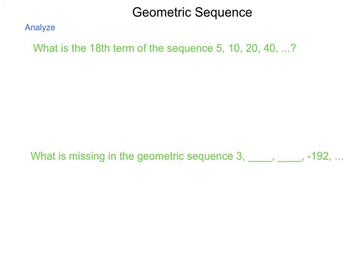Looking at this, in order to move from 5 to 10, we multiply by 2, 10 to 20, we multiply by 2, 20 to 40, we also multiply by 2. So we have a sub n equals 5 times 2 to the n minus 1 power.